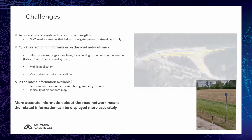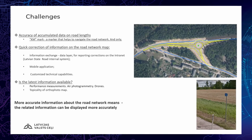What challenges do we still have? We still need to work on the accuracy of accumulated data and road network length. We need to understand that a road kilometer marker is just a marker that helps navigate on the road network in the field only. We need to be as quick as possible to correct information on the road network map and ensure information exchange between different departments in our company and with the public as well. More accurate information about the road network means that all related information can be displayed more accurately.